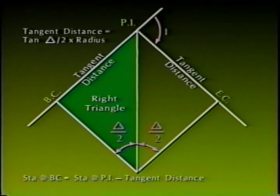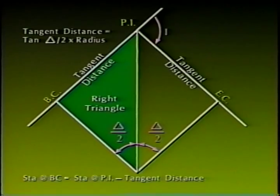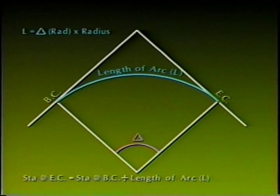Let's review two basic facts of horizontal curves: angle I always equals delta or central angle, and radial lines from the BC and EC are always perpendicular to the tangents. The line from the radius point to the PI bisects all related lines and angles. The formula for sub-tangent distance is: T equals the tangent of one-half delta times radius. Note the right triangle formed by the line from the radius point to the PI (hypotenuse), the radial line to the BC (adjacent side), and the back sub-tangent (opposite side). To find the station of the BC, subtract the sub-tangent distance from the preliminary station of the PI. The length of arc L is computed by multiplying delta expressed in radians by the radius. To determine the station of the EC, add L to the station of the BC.